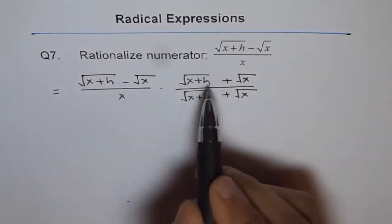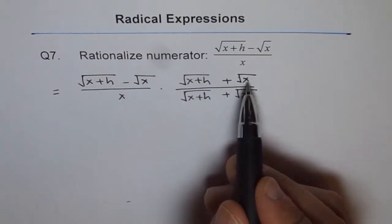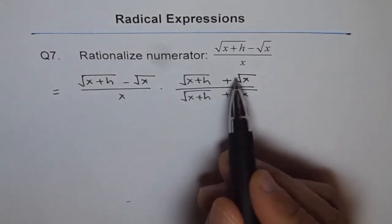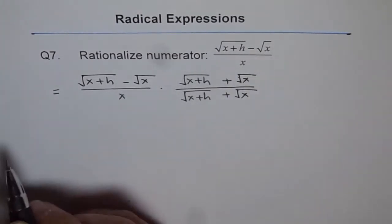Since this is equivalent to 1, square root of x plus h plus x divided by the same term, they cancel out, give you 1. So this expression is same as the given expression.